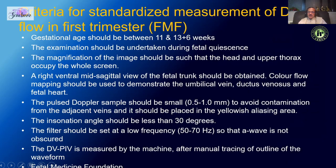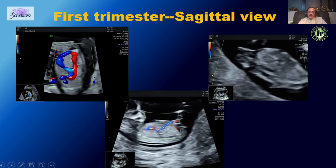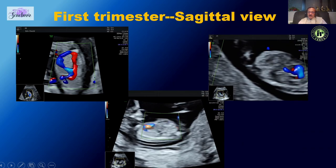Tricuspid regurgitation is associated not only with chromosomal abnormalities but also with cardiac defects, as we will see in some examples. We then look at the ductus venosus — you can go to the FMF website to see in detail how to assess it.